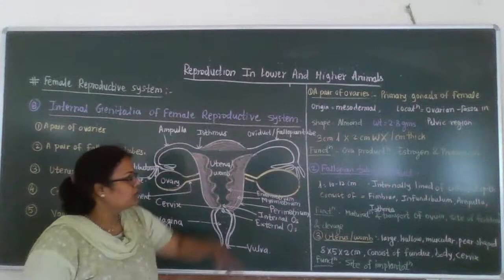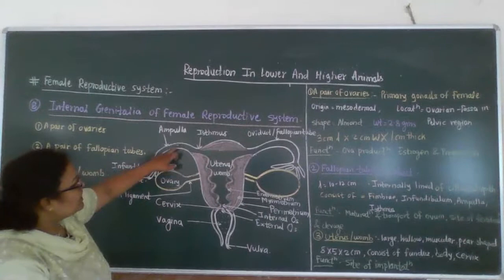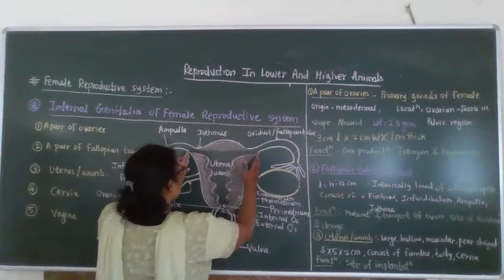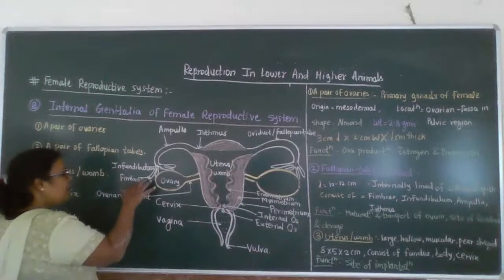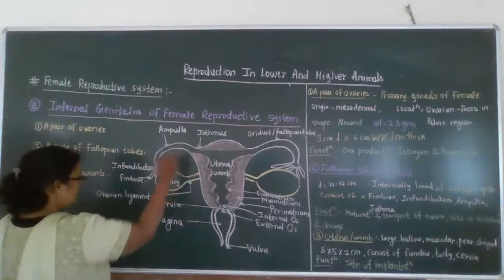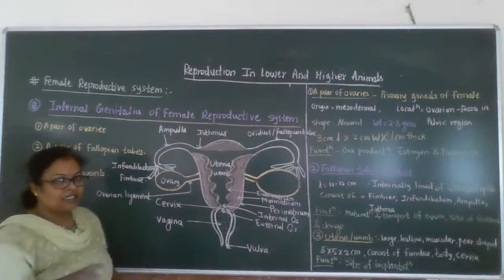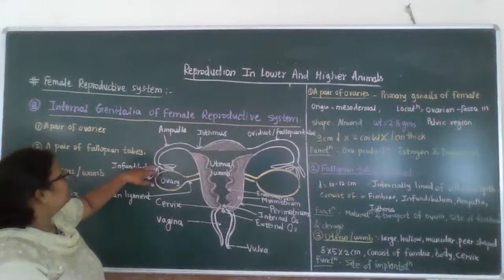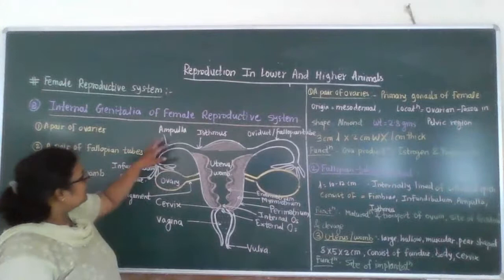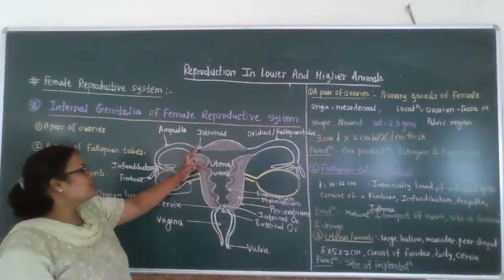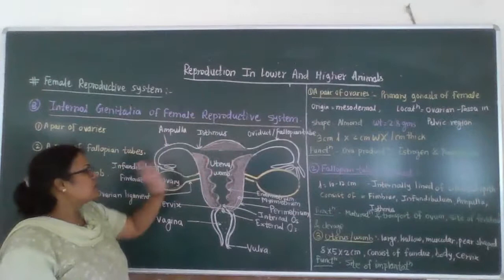The next part is the fallopian tubes, also called as the oviduct. Their length is about 10 to 12 cm, present on either side of the uterus. They consist of fimbriae — finger-like projections — then the infundibulum, and the isthmus. The fimbriae are very close to the ovaries and have large ciliated epithelial cells. The ampulla is the site of fertilization. The isthmus is the end portion of the oviduct where it opens into the uterus.